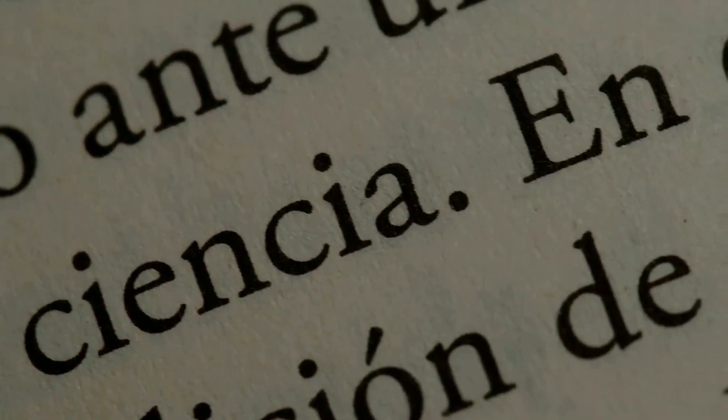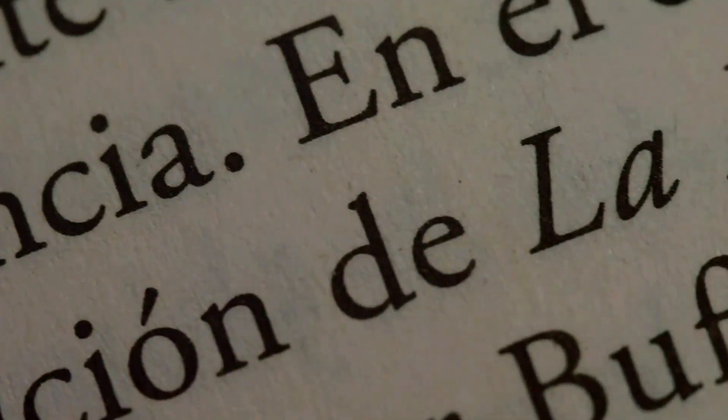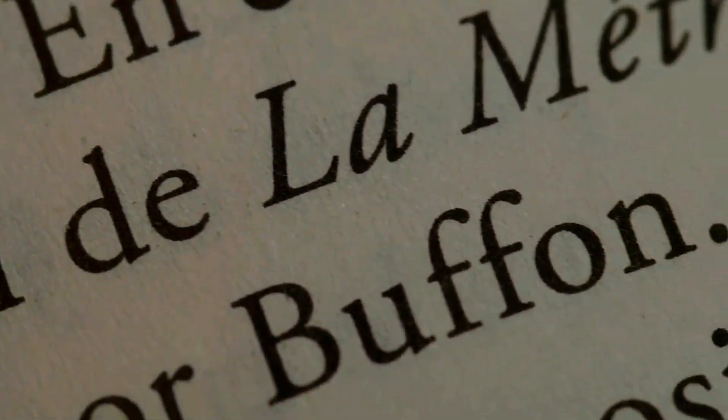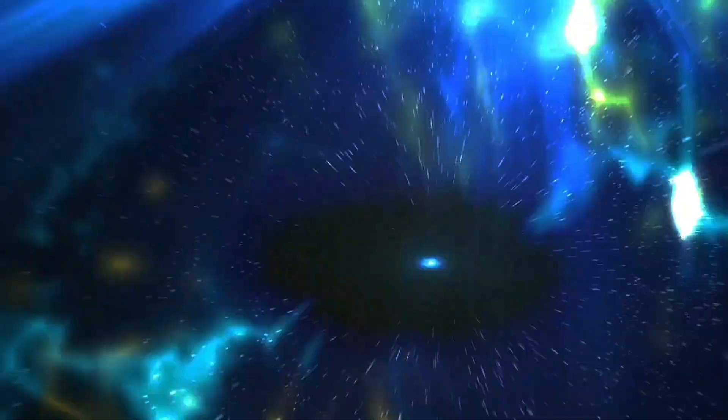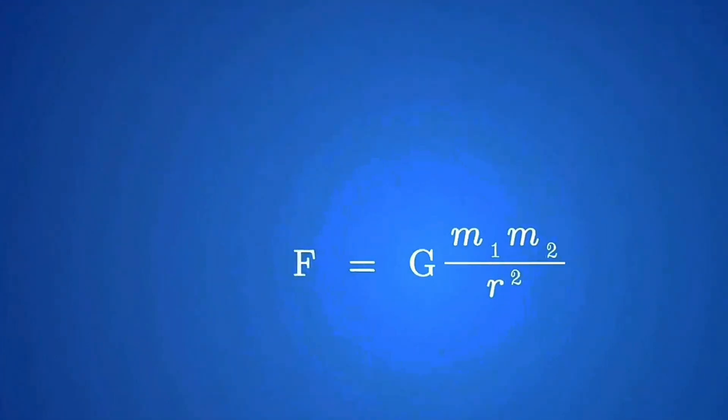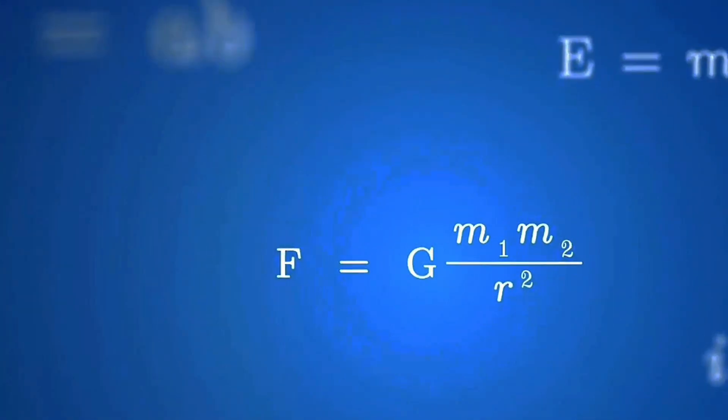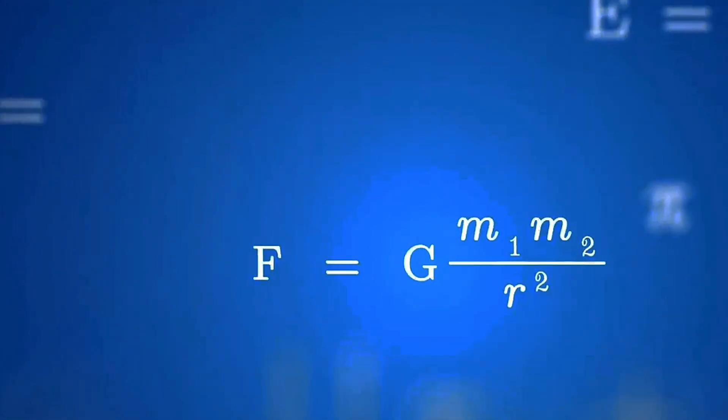Finally, consider the anthropic principle, which suggests that our universe's conditions are finely tuned for intelligent life. If these conditions were slightly different, we might not be here to contemplate them. Maybe alternate versions of us thrive in parallel universes while we remain blissfully unaware.